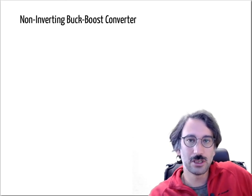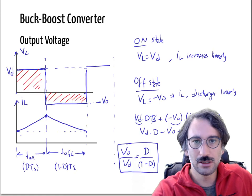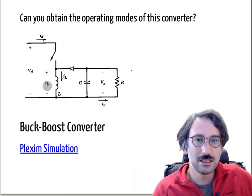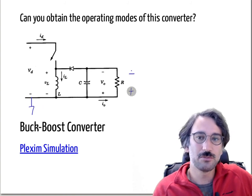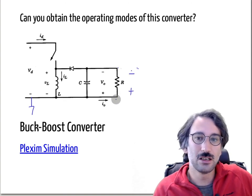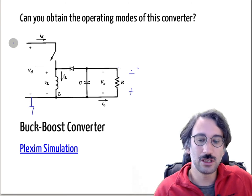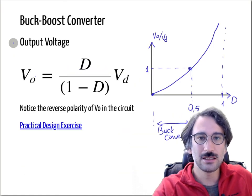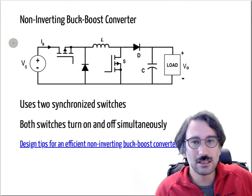The first one we will see is the non-inverting buck-boost converter. If you remember from the last lecture, the buck-boost converter can be a disadvantage in some cases — if this is your main ground, the output voltage produces a negative voltage. So either you define the load ground differently, or if you use the same ground you end up with a negative voltage with respect to your input voltage, which can be problematic for some applications.